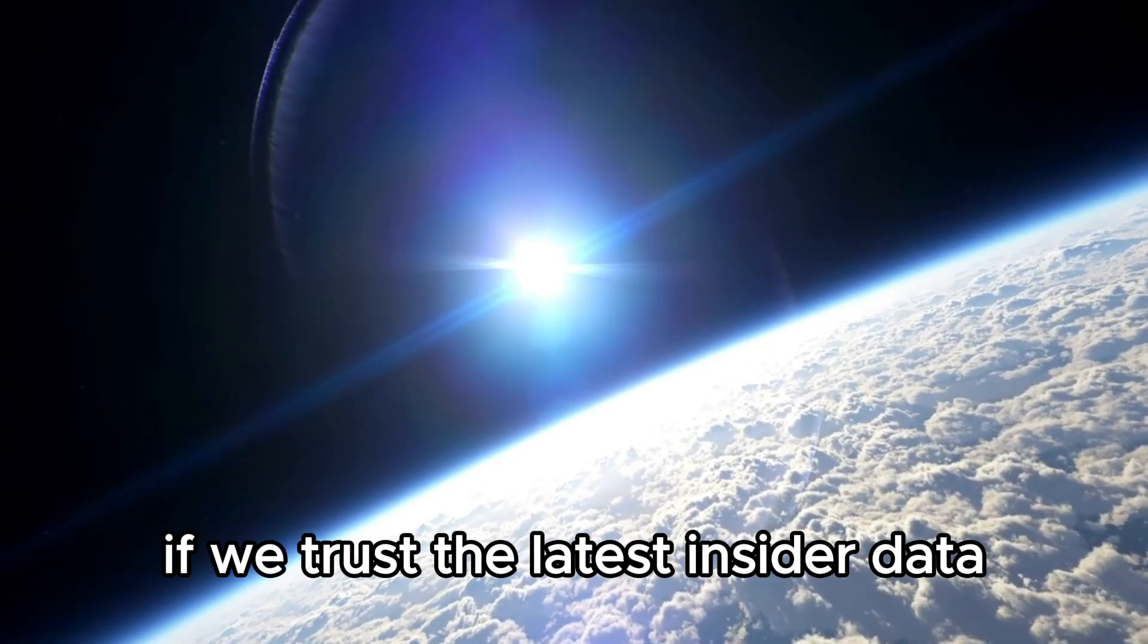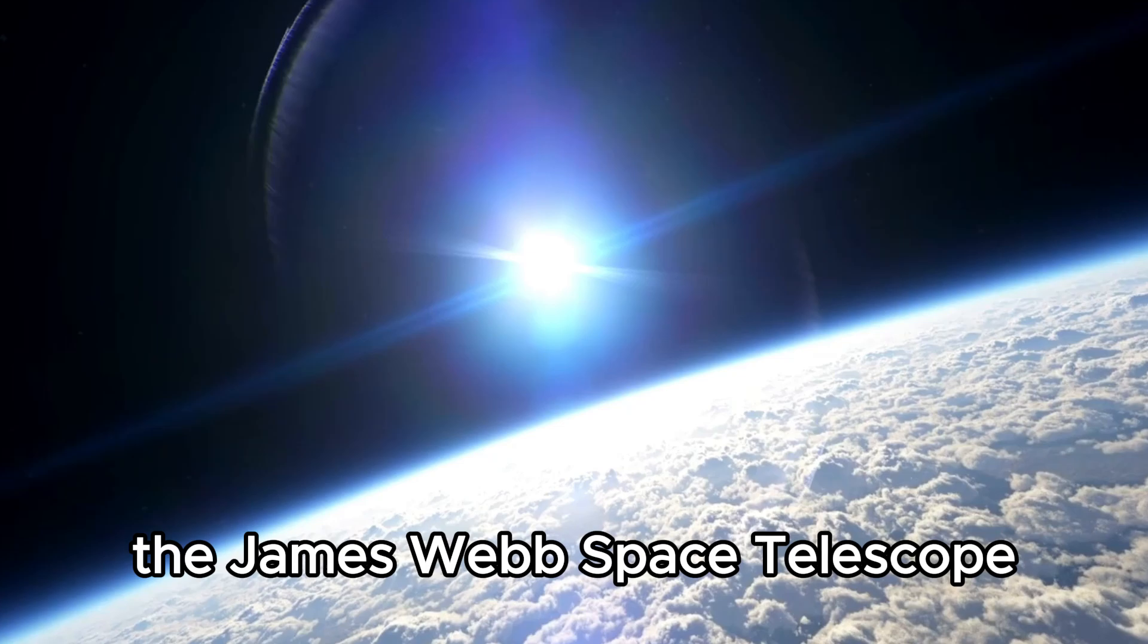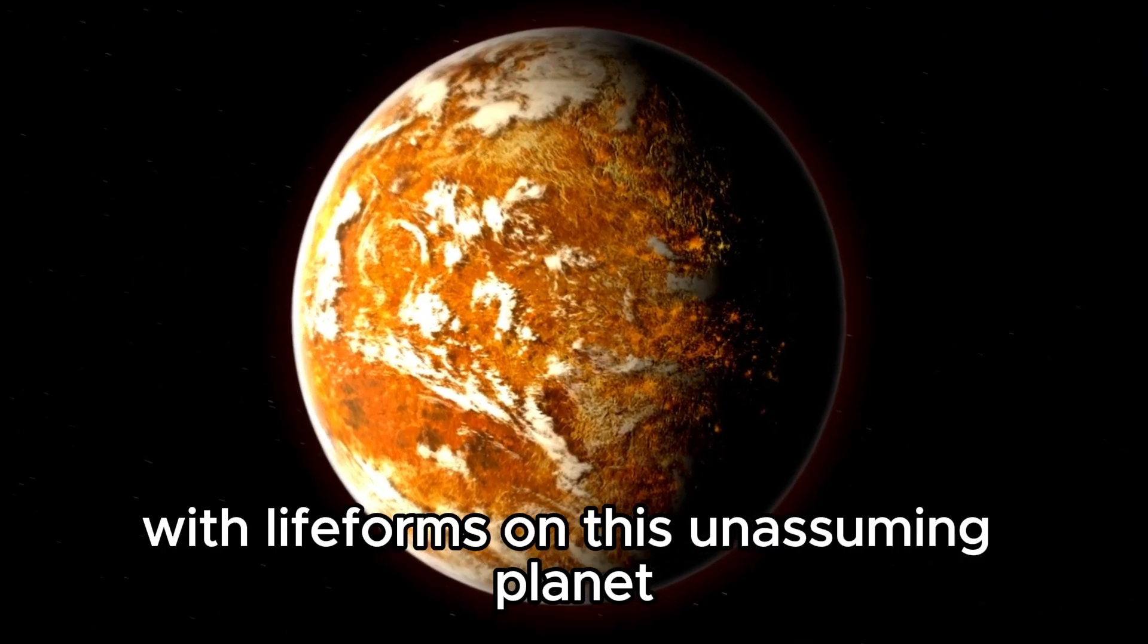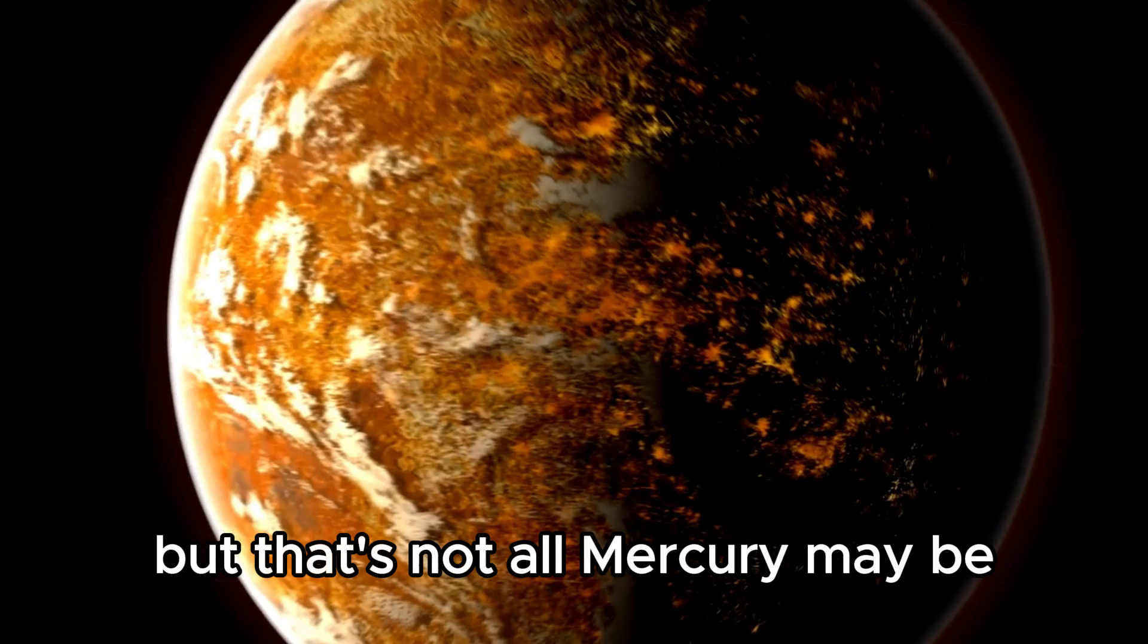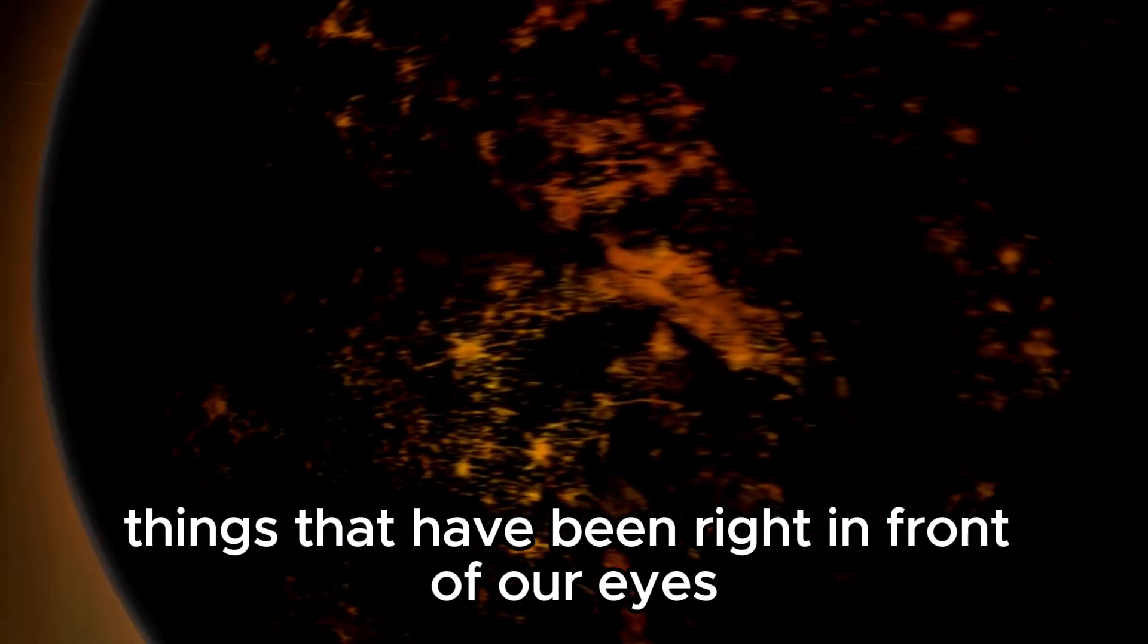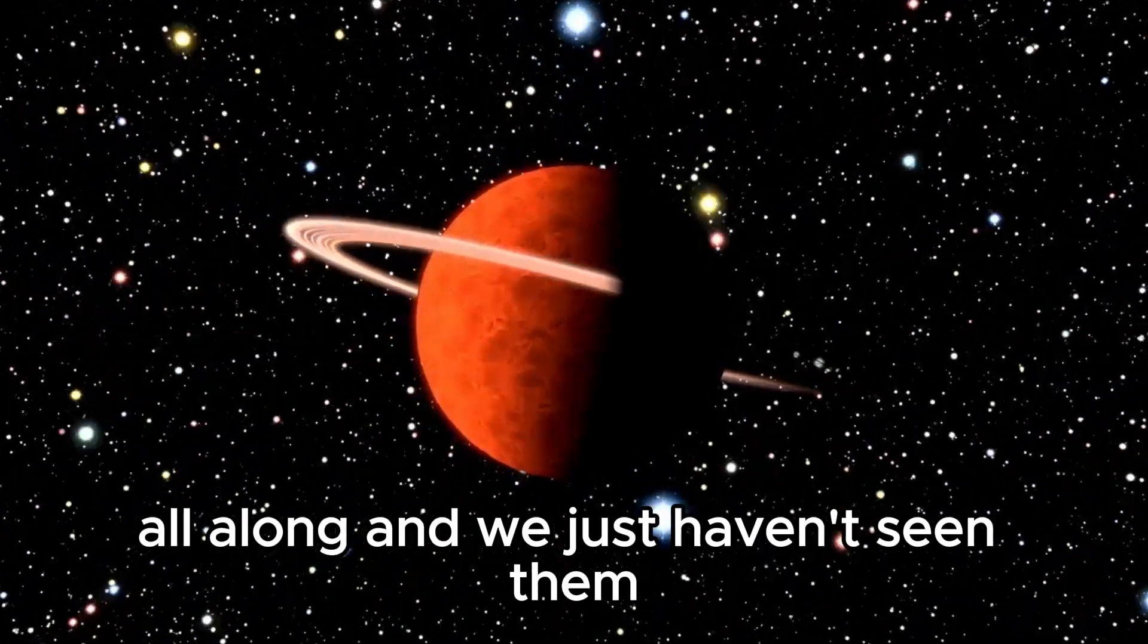Something is wrong with Mercury if we trust the latest insider data. The James Webb Space Telescope has found evidence of a past with life forms on this unassuming planet, but that's not all. Mercury may be completely different from what we thought. It may be hiding things that have been right in front of our eyes all along, and we just haven't seen them.